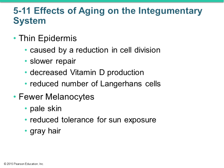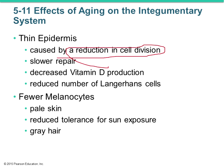Last, the effects of aging on the integument. Cell division slows as we age — metabolism slows, we don't have as many cells, so the epidermis becomes thinner in older individuals. This means slower repair and less vitamin D production. Fewer and less active melanocytes mean gray hair and pale skin, and you may not be able to tolerate being in the sun as long.